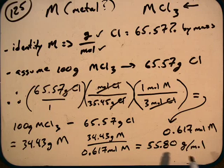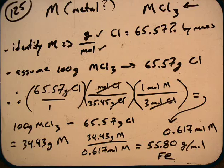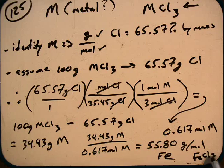And if we go to the periodic table, we see that we are talking about the atom, or element rather, iron. So the unknown metal is iron. And so we have FeCl3 as our compound, and that would be iron 3-chloride or ferric chloride. That is number 125.